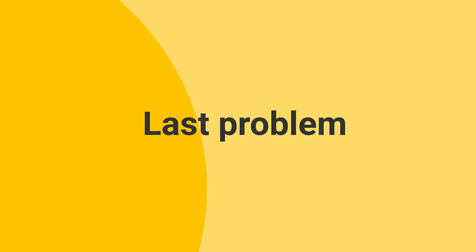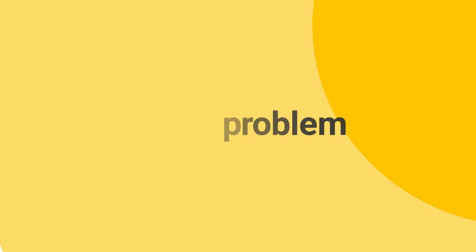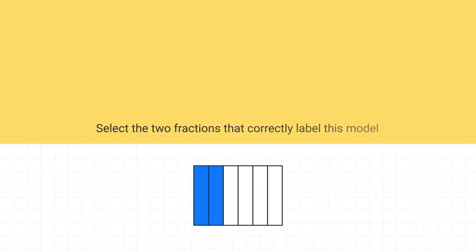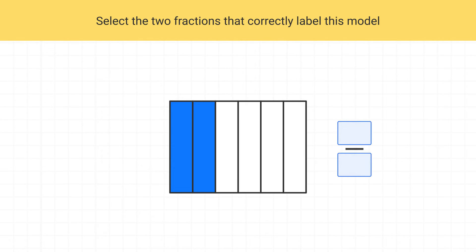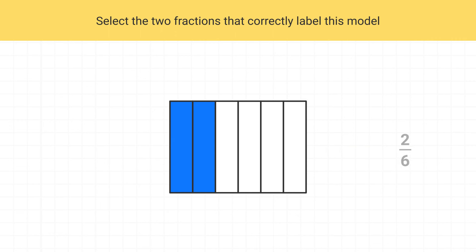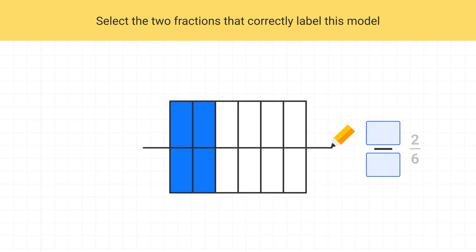Here's your last problem for this video. Select the two fractions that correctly label this model. Well, the first fraction is found just by looking at the model and seeing that right now two-sixths of it are shaded. The next fraction is the equivalent one. If I split each piece of the fraction into two smaller pieces, we have the equivalent fraction four-twelfths.